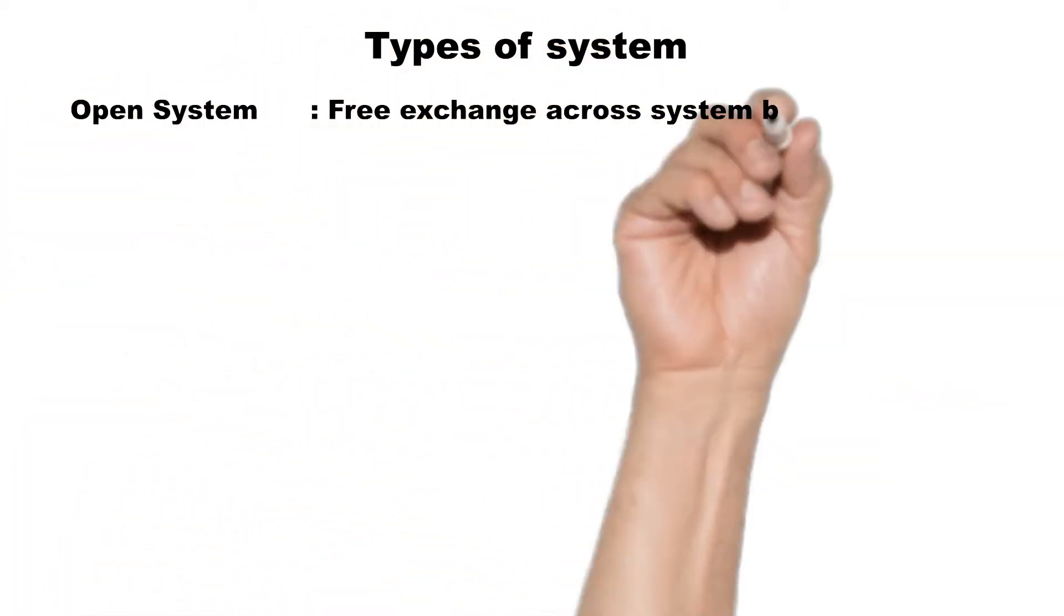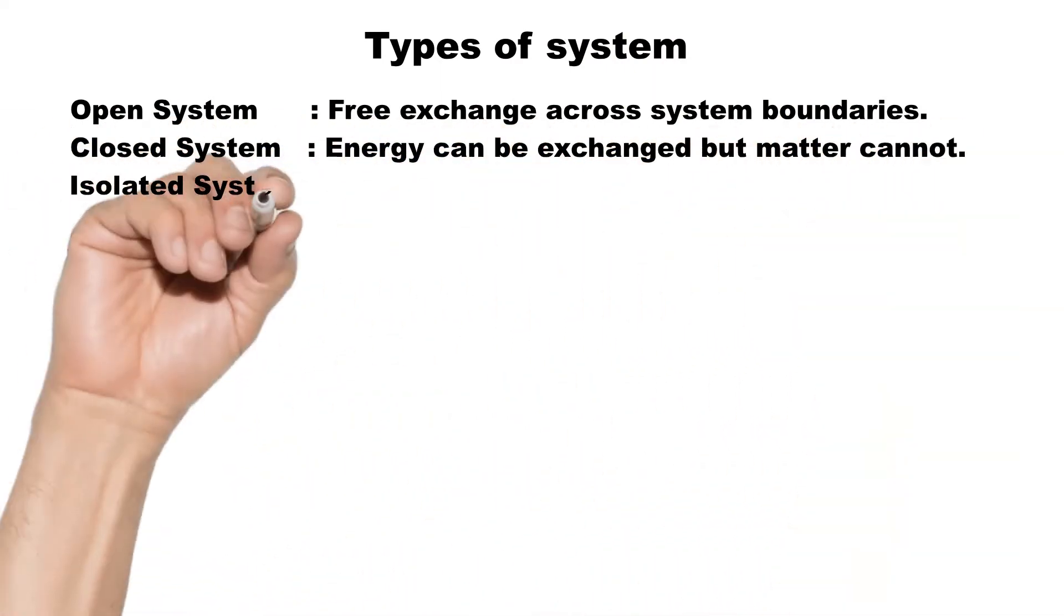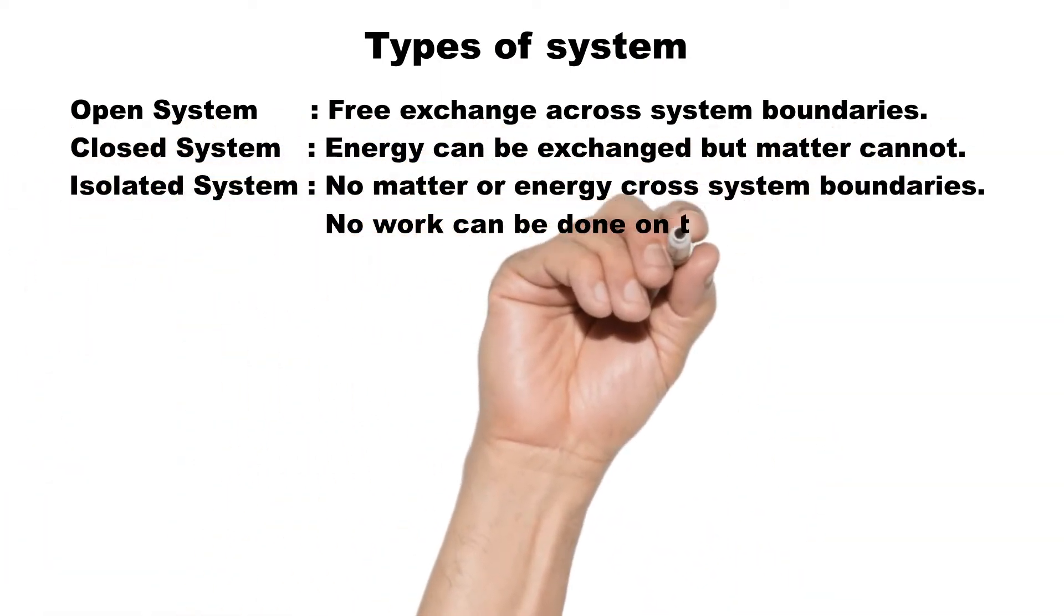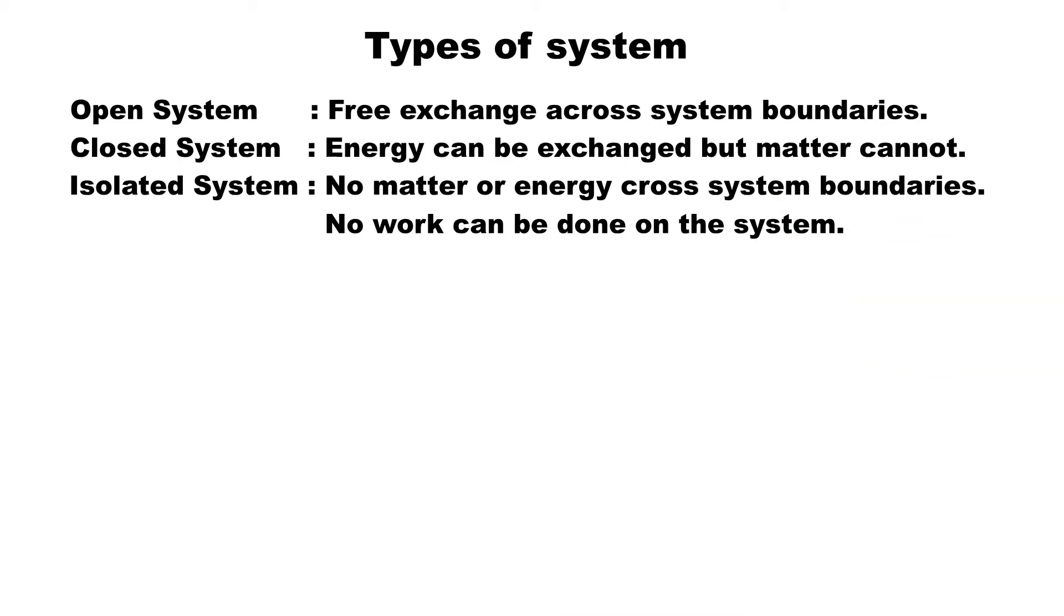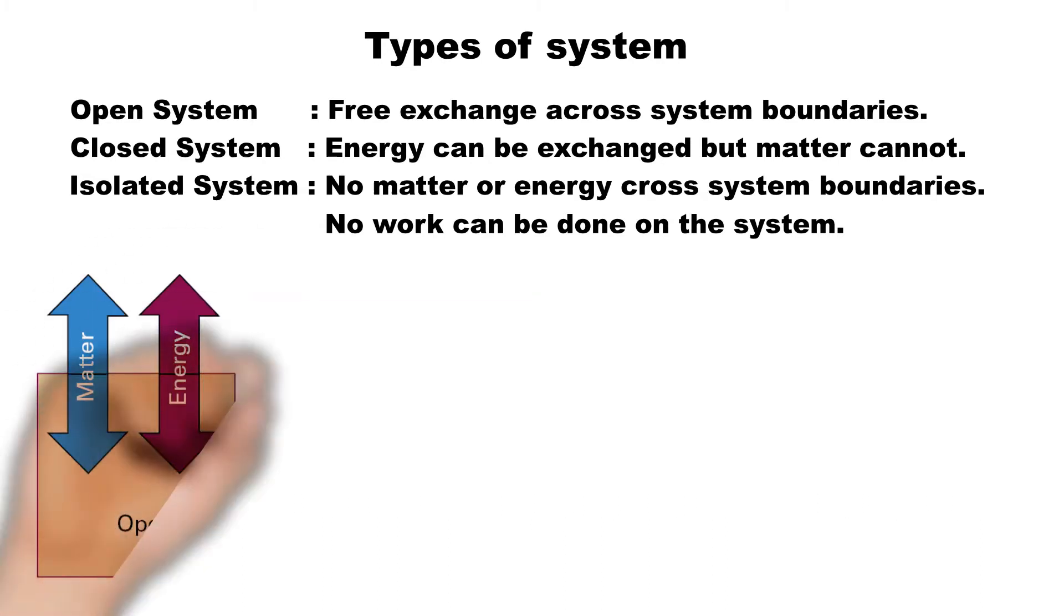The type of system depends on the characteristics of the boundary that divides it from the surroundings. There are three types of system, namely, open, closed, and isolated system. An open system can exchange both energy and matter with its surroundings. An open cup of coffee is a simple example of an open system.